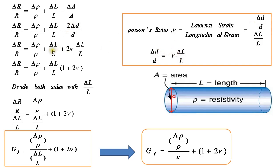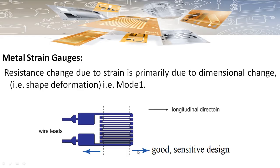Substituting into the equation, we get δR/R = δρ/ρ + (δL/L)(1 + 2ν). Dividing both sides by strain δL/L, we obtain the gauge factor G = (δρ/ρ) / (δL/L) + 1 + 2ν. This is the gauge factor equation of the strain gauge.